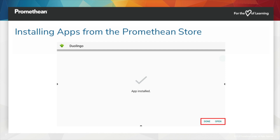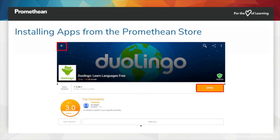Once an app has finished installing, you will receive a confirmation and the option to open the app. Tapping Done will return you to the app page, at which point you may open the app or use the back arrow in the top left to return to the Promethean Store and continue browsing.